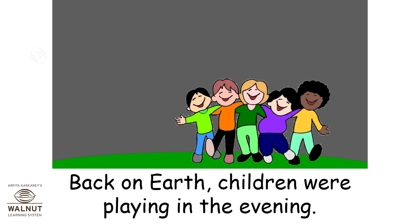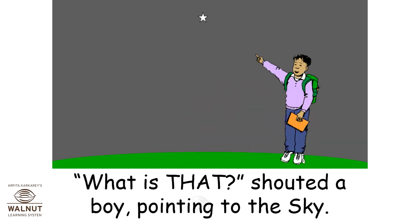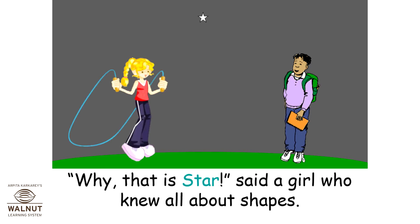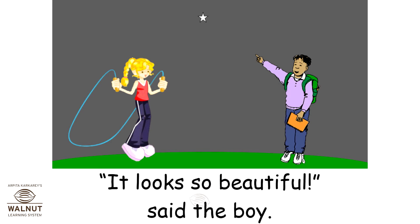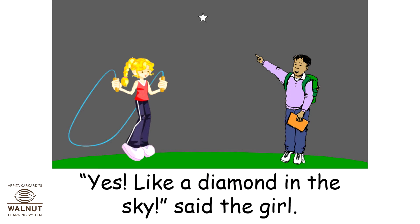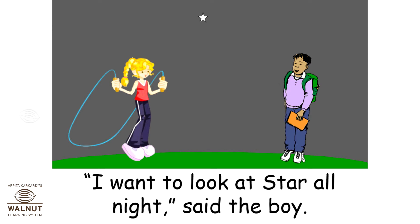Back on earth, children were playing in the evening. 'What is that?' shouted a boy, pointing to the sky. 'Why? That is star,' said a girl who knew all about shapes. 'It looks so beautiful,' said the boy. 'Yes, like a diamond in the sky,' said the girl. 'I want to look at star all night,' said the boy.